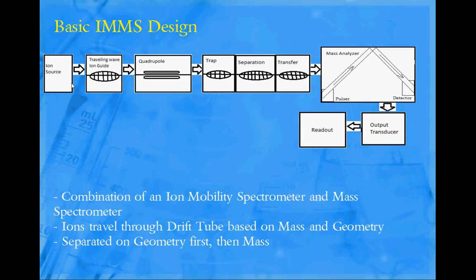The trap repels unnecessary and unwanted molecular weights and sizes. Separation is where the actual collisions take place and the transfer is where the inert gases are gotten rid of because they could interfere in the mass analyzer part.